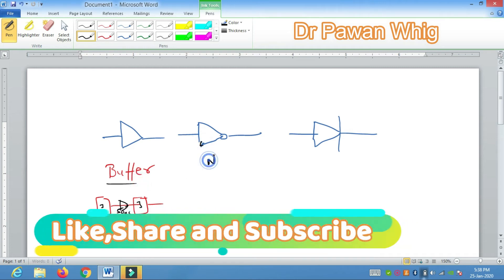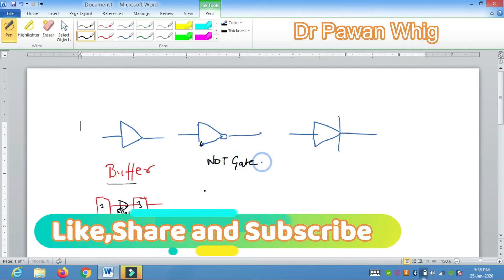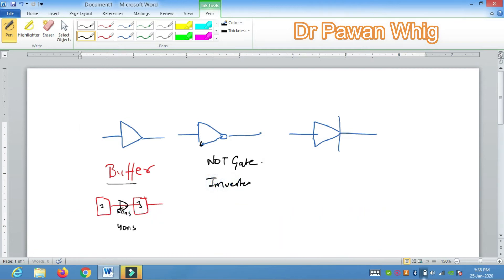Now second one is very important and this is what we call NOT gate. See, NOT gate is a gate which is also called inverter. Whatsoever your input is, it is inverted at the output. Let us suppose here at point A it is zero one, so at the output it is one and zero.